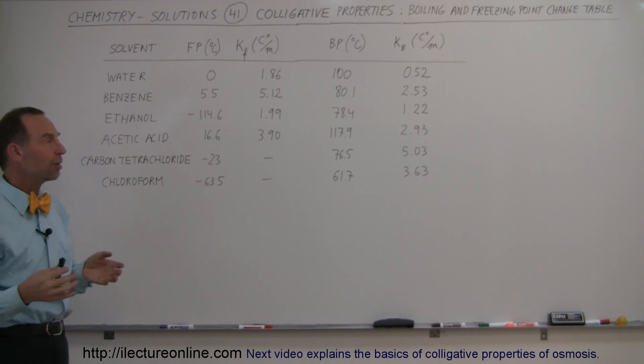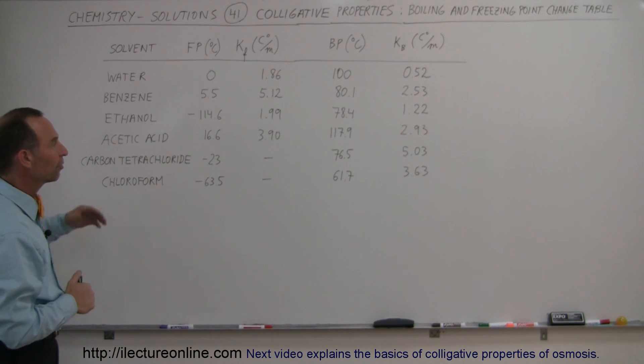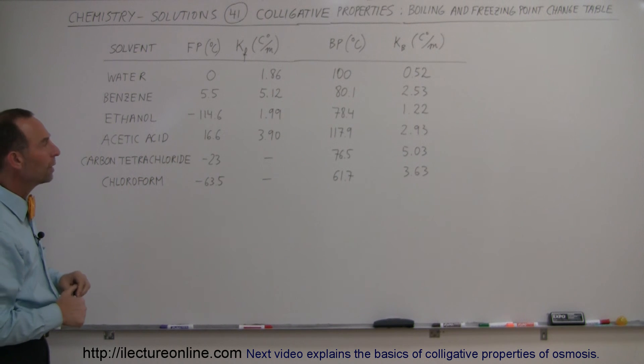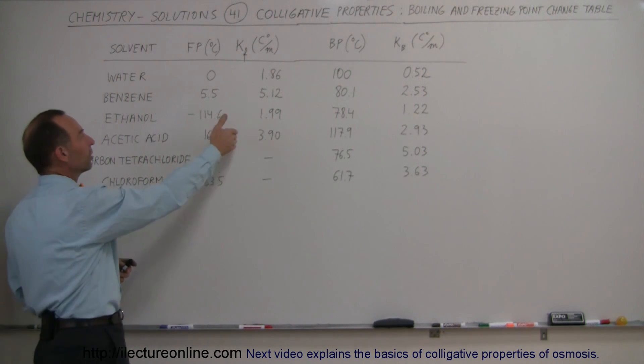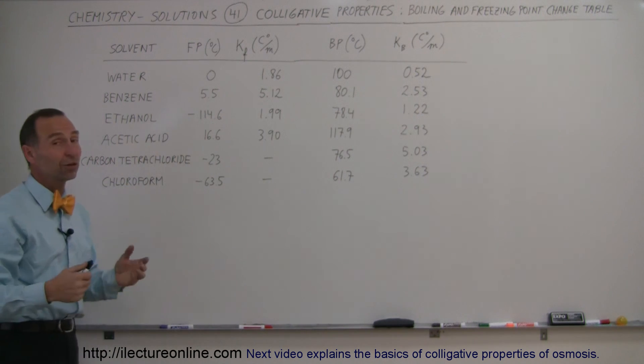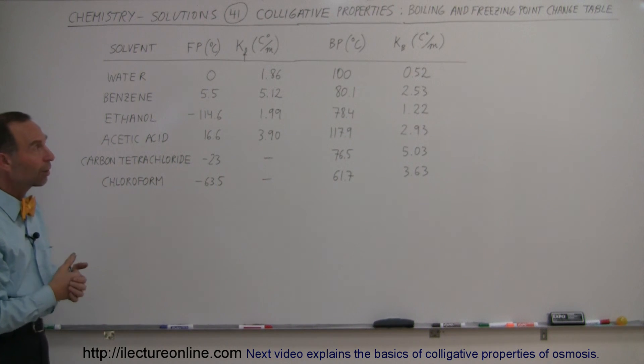So again, not a lot of information here, but just enough to see how you can compare these things between different solvents and how knowing these constants can really help you make a substance that will be more resilient to freezing at temperatures that you don't want them to freeze or boil at temperatures that you don't want them to boil. And so just a quick overview of some various constants.